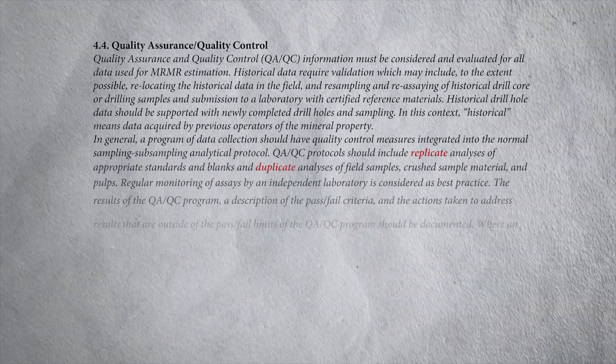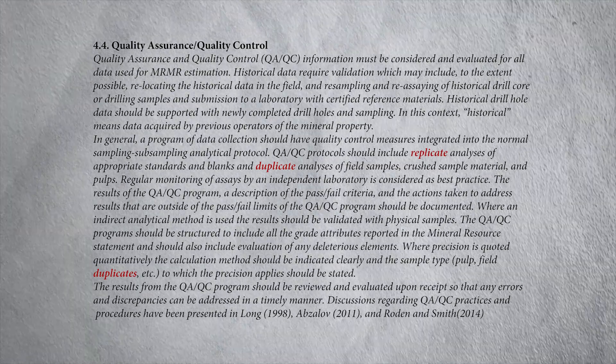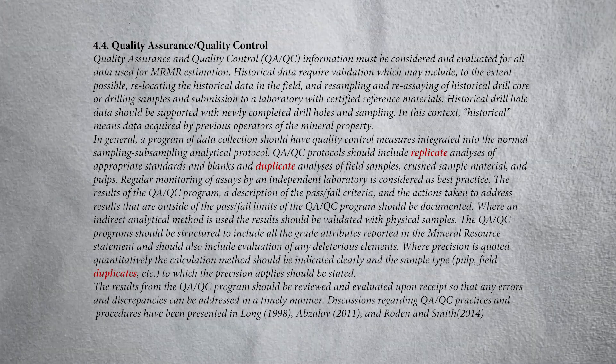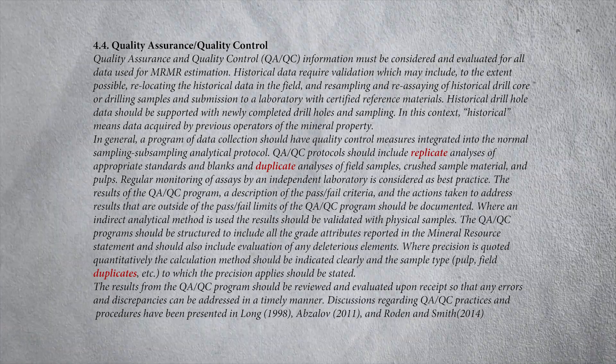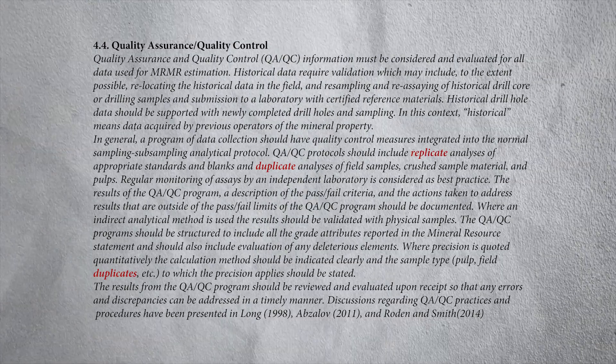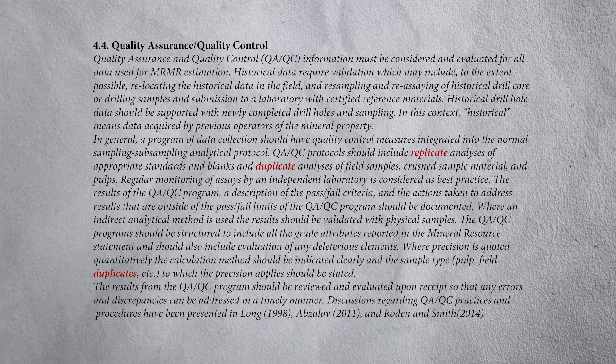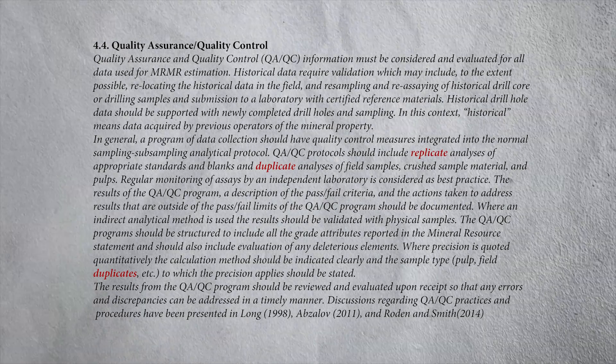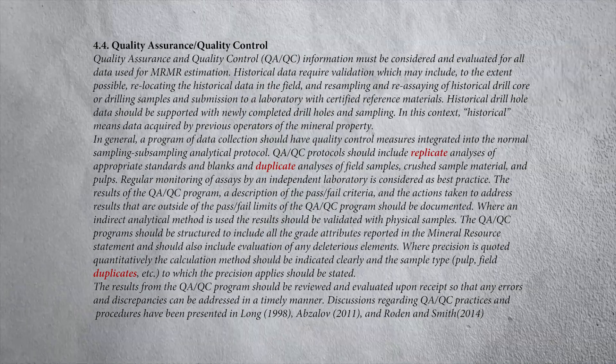Let's look at the definitions in our favorite documents — CIM guidelines, because these people know what they're talking about, they set the rules, this is what we follow. Let's do a word search for replicate, duplicate, and repeat. In that document, you will not find the word repeat. They are only talking about duplicates and replicates, but it is not clear from the document whether replicate is different than duplicate. Under section 4.4 quality assurance and quality control: QAQC protocol should include replicate analysis of appropriate standards, blanks, and duplicate analysis of field samples. Where precision is quoted quantitatively, the calculation method should be indicated clearly, and the sample type — pulp, field duplicates, etc. — should be stated. They reference several key QAQC papers there, and we need to add Barry Smith et al.'s paper from early this year, which will be a critical paper to quote into the future.